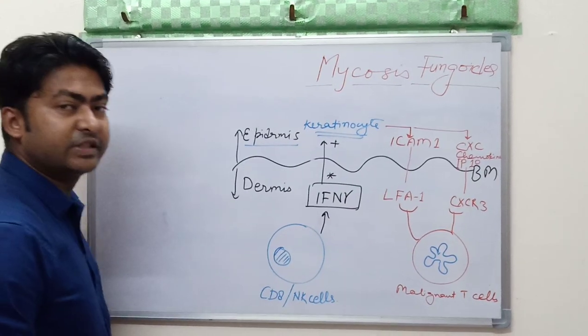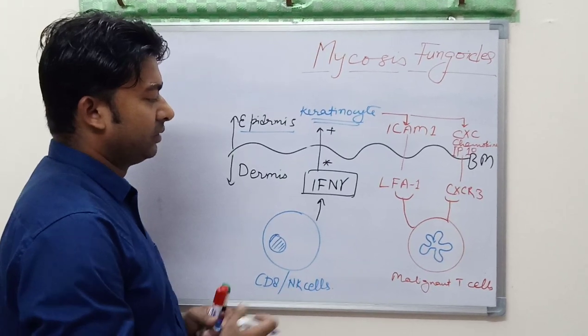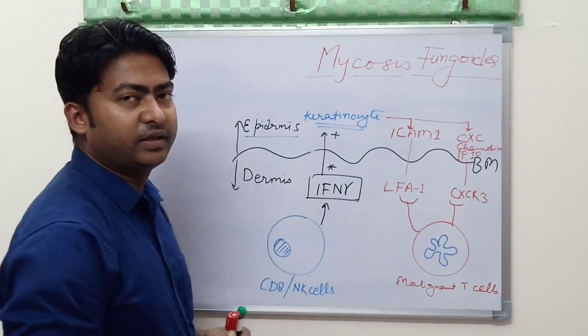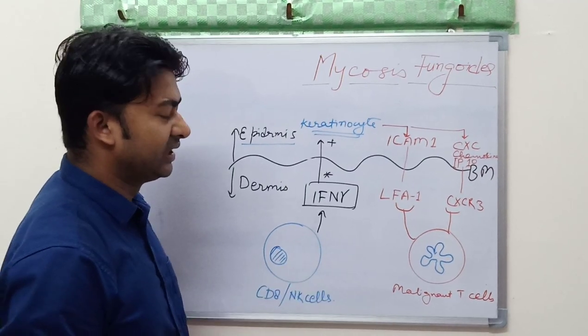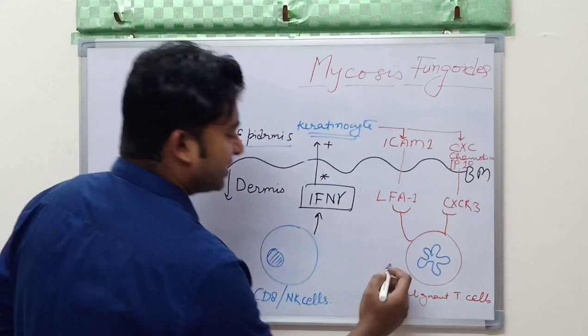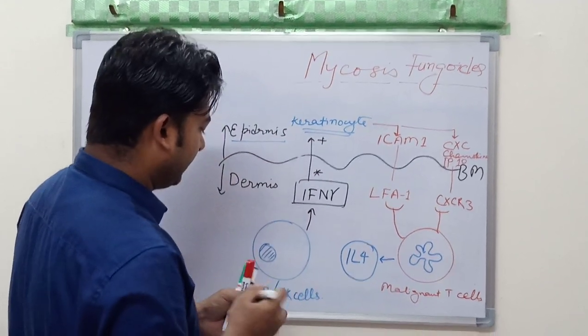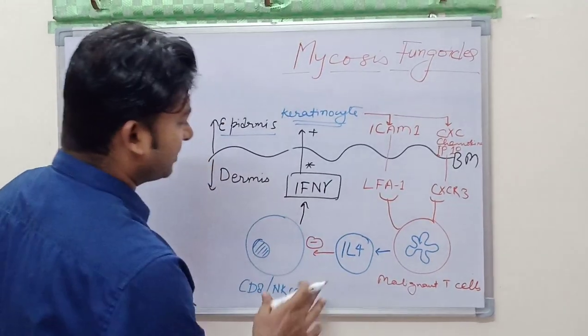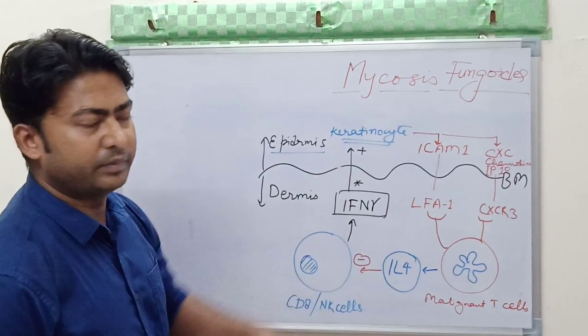This epidermotropism is present only in the patch and plaque stage of mycosis fungoides. As the tumor advances and the tumor stage is reached, we do not find epidermotropism. There is loss of epidermotropism. In the late stage, these malignant cells also secrete interleukin-4, and this interleukin-4 is going to inhibit the CD8 or NK cells, so the formation of interferon gamma will reduce and hence there will be loss of epidermotropism.